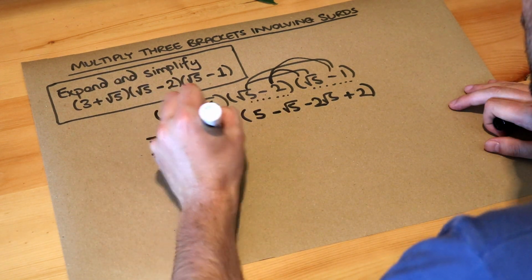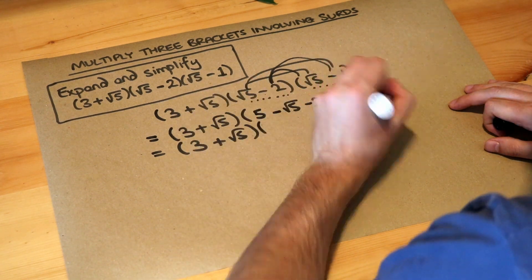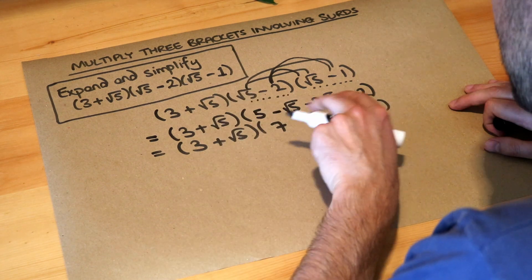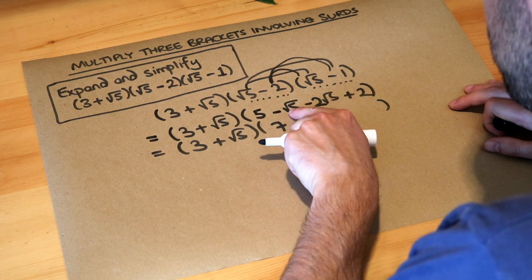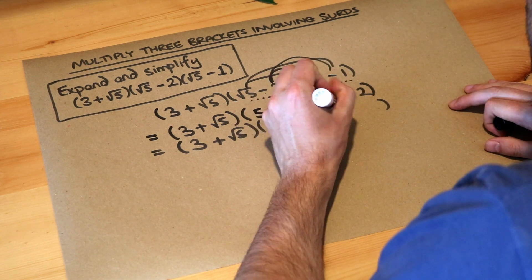Let's tidy up that second bracket. 5 plus 2 is 7. Then we collect the surd terms together. We've got -1√5 minus 2√5, which is -3√5.